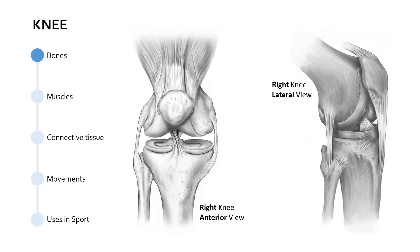Beginning with the bones, we've got two diagrams here. We've got both the right knee — the anterior view on the left, that's the view from the front of the right knee, and then we've got a lateral view, or a view from the side, the outside of the right knee, on the right-hand side of the screen.